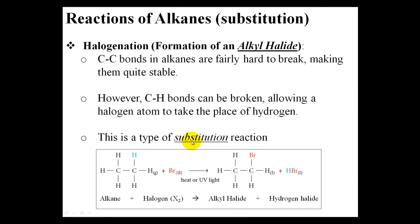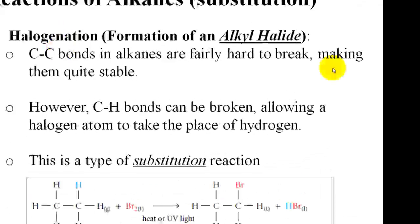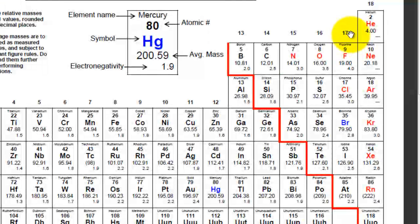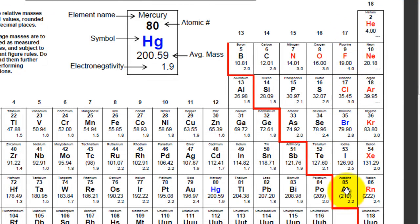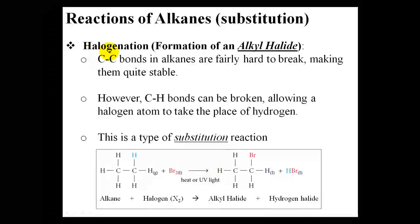The next reaction type for alkanes is a type of substitution called halogenation. The key word here is halogen — we're talking about elements in group 7A or group 17 of the periodic table: fluorine, chlorine, bromine, or iodine. Not astatine because it's radioactive, and iodine is not very reactive either. Primarily we'll be looking at fluorine, chlorine, and bromine, which make up the halogen group — hence the name halogenation.